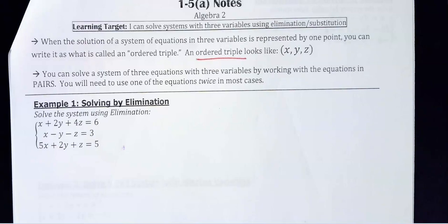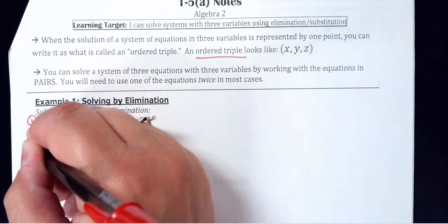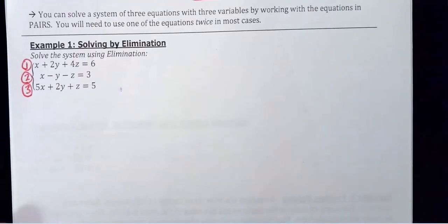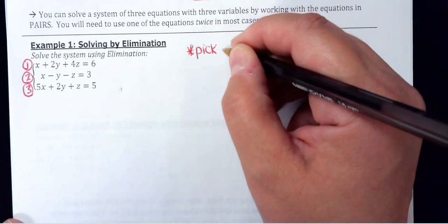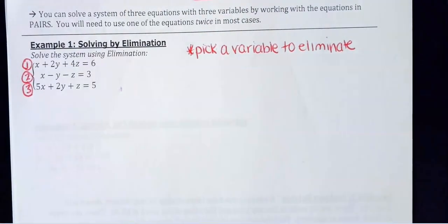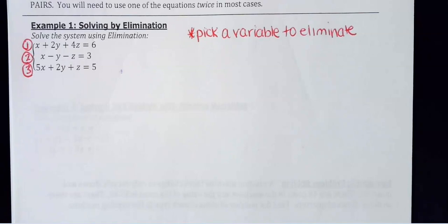Whenever I have a system this large, I usually just number the lines. You've got three different equations here. What we're going to do is elimination first, and then substitution. The first step: pick a variable to eliminate. You can pick any variable from the system, but sometimes one might be easier than another — we could all attack this differently and still get the same answer.